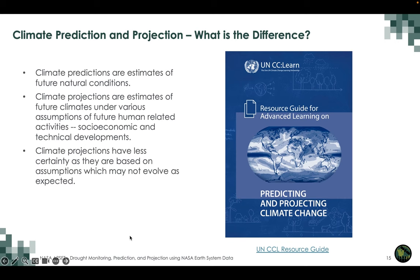Now let's look at what is climate prediction versus projection and what's the difference. Climate predictions are estimates of future natural conditions — for example, the S2S prediction system starts with observed initial conditions and then the model is integrated in time. Whereas climate projections are estimates of future climates under various assumptions of future human-related activities in socio-economic and technical demographics. So climate projections have less certainty as they are based on assumptions which may not evolve as expected.